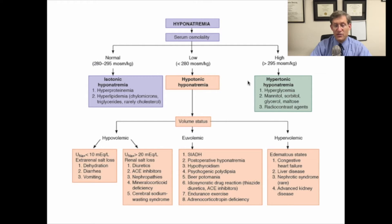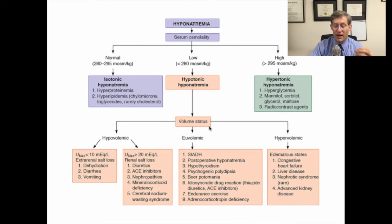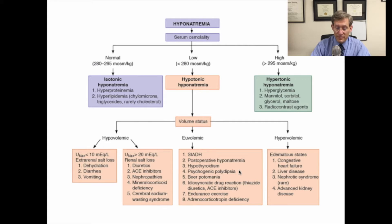Once you've made the initial determination of which category of hyponatremia the patient has, you need to make a clinical determination of their volume status. Patients can fall into three categories: hypovolemic, euvolemic, and hypervolemic. Many patients will have the classic category of euvolemic hypotonic hyponatremia. These include some of the most important clinical entities, including the syndrome of inappropriate antidiuretic hormone (SIADH), hypothyroidism, adrenal insufficiency, beer potomania, and psychogenic polydipsia.